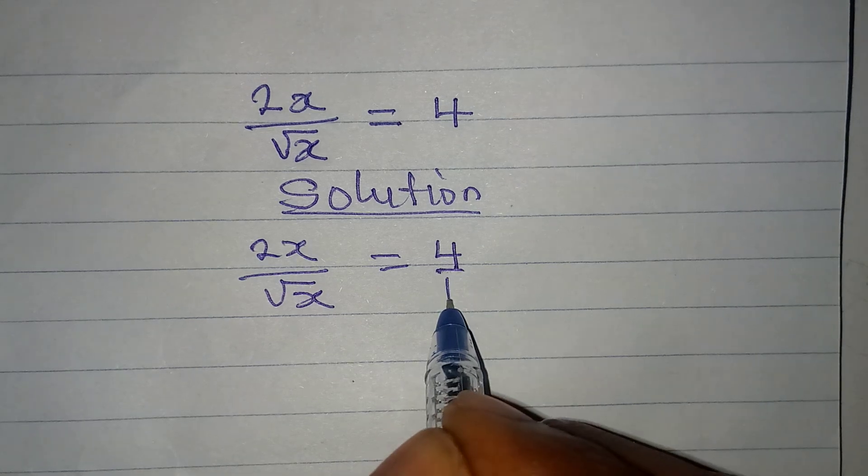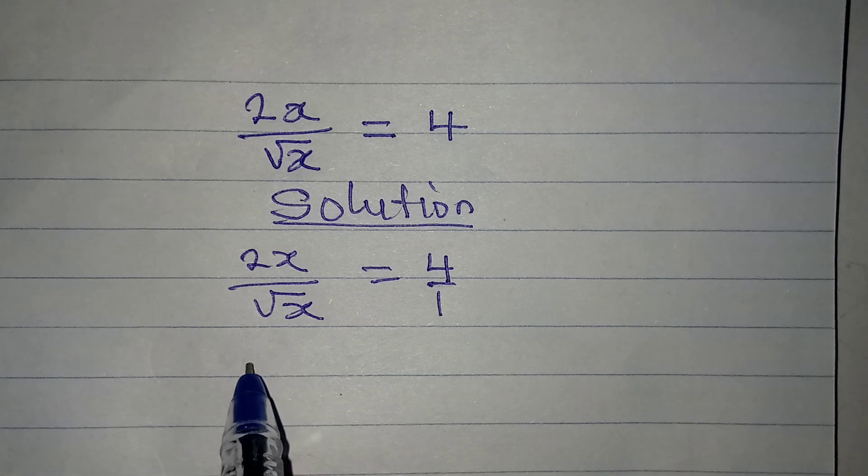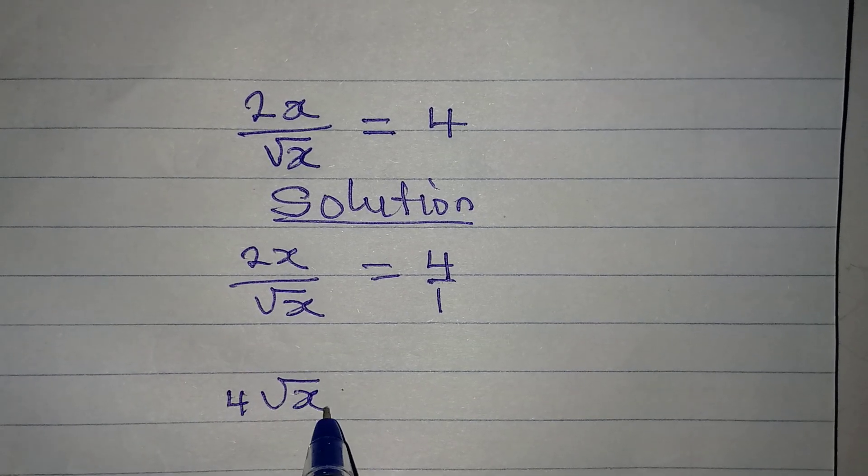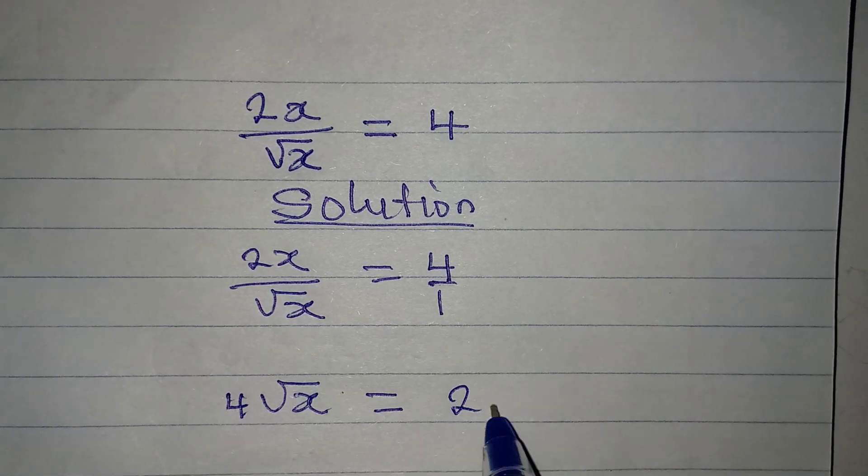This could be over 1 and we can equally cross multiply so that if we do that, we will have 4 root x to be equal to 2x times 1 and that is 2x.